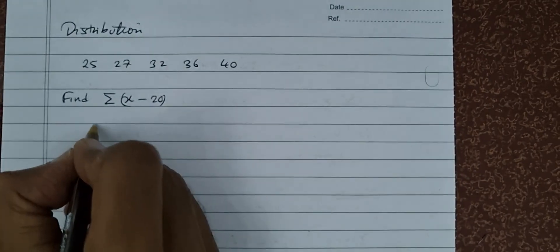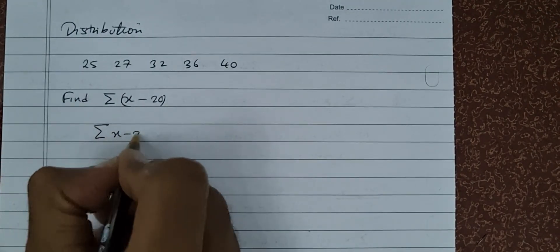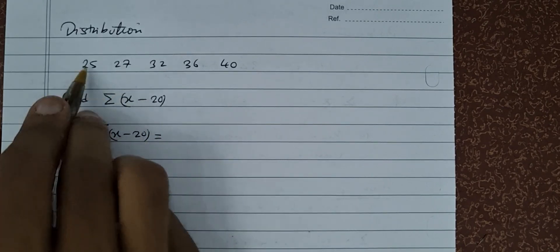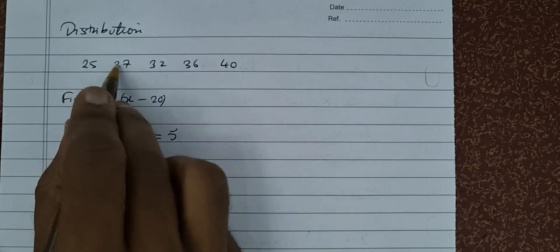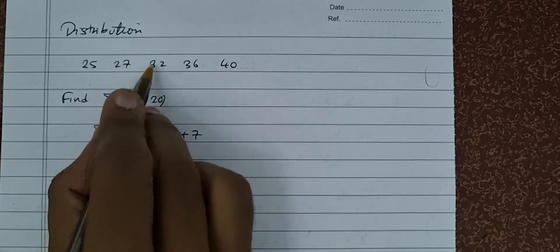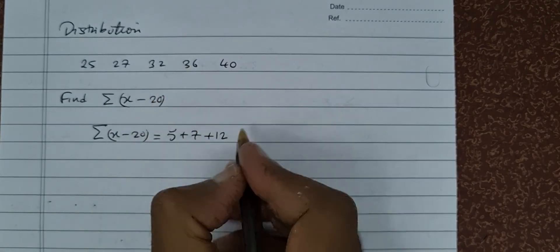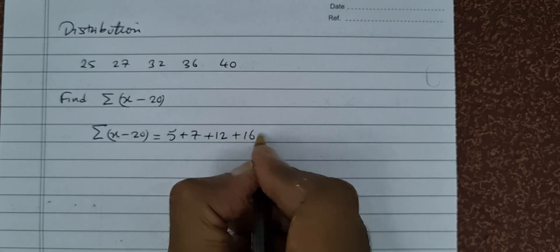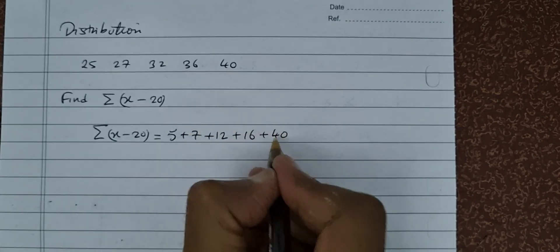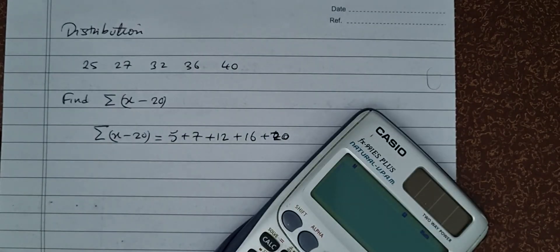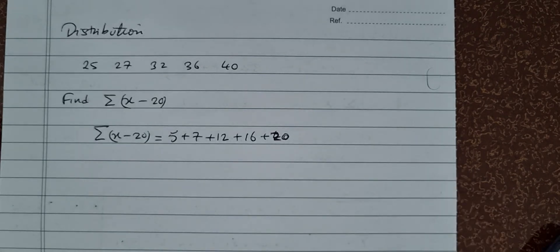Basically what we do, you take each of these values and you subtract 20. So 25 minus 20 is 5, 27 minus 20 you're going to get 7, 32 minus 20 is 12, 36 minus 20 is 16, and 40 minus 20 is 20. So let's add these up: 5 plus 7 is 12, plus 16, plus 20.